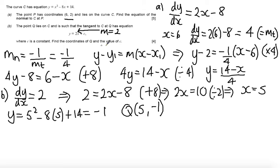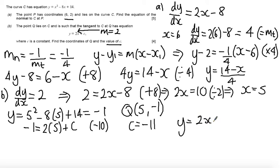The last part of this question, I didn't want to just find the coordinates of Q. I want to find the value of C. So I'm just actually going to substitute the x and y value into that equation. I'm not going to use y equals mx plus C, simply because I've already got it written in this formula here. So I'm going to have minus 1 is equal to 2 lots of 5 plus C. So I'm going to subtract 10 from both sides. So I get C equals minus 11. And so your equation of the tangent is y equals 2x minus 11.